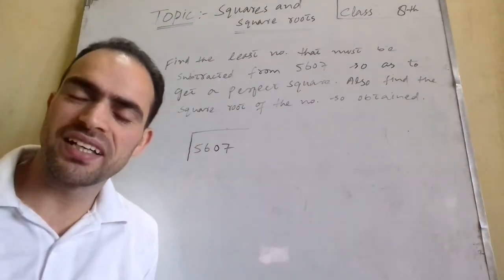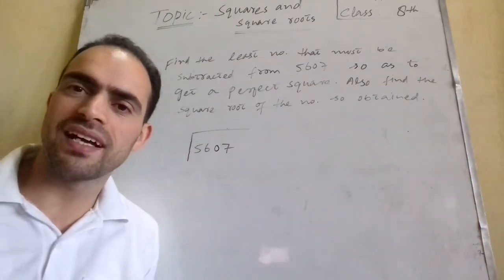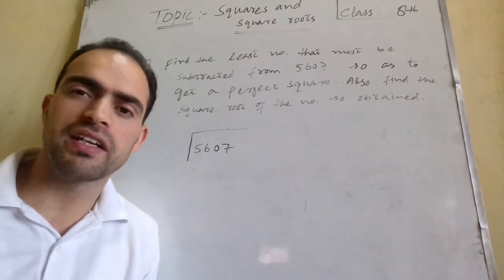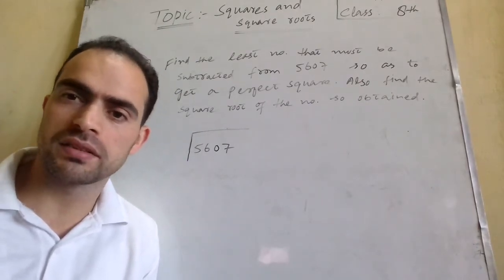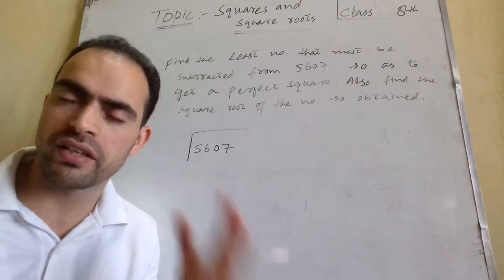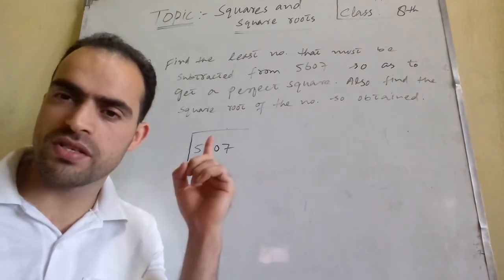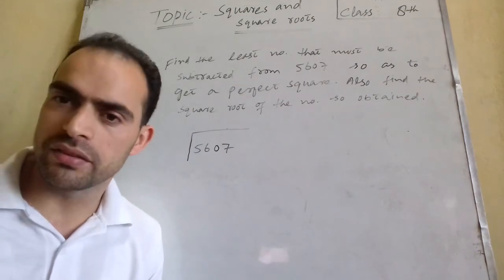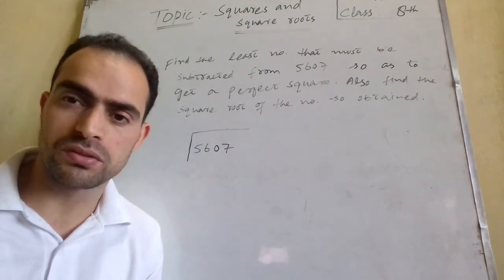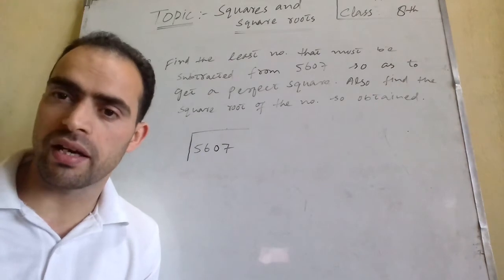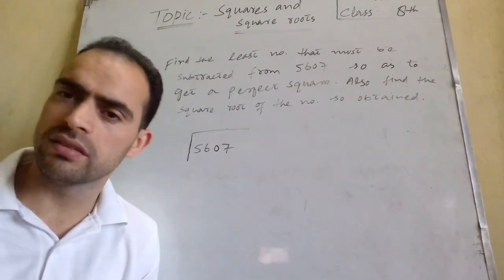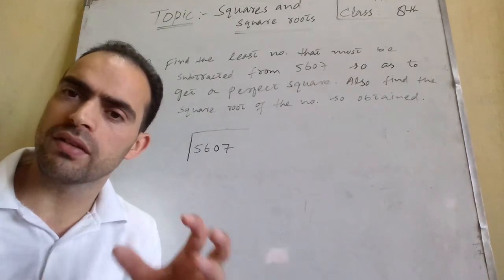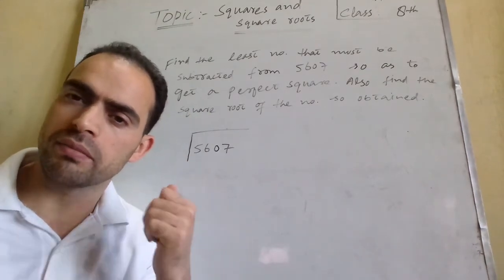Hello, welcome back to the mathematics online class. In this special video I am going to show you a very important question. This type of question is frequently asked in exams. The question says: find the least number that must be subtracted from the given number so as to get a perfect square, and also find the square root of the number so obtained.